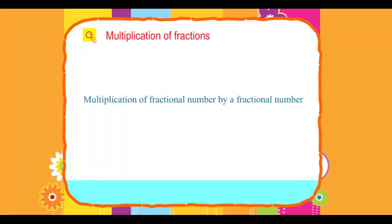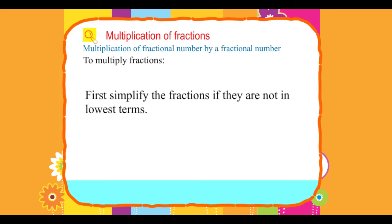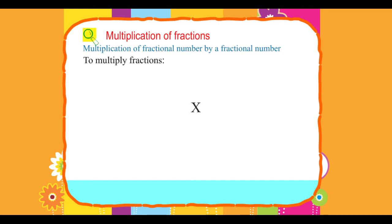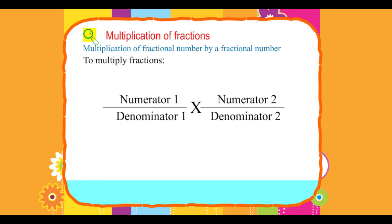Multiplication of a fractional number by a fractional number. To multiply fractions, first simplify the fractions if they are not in lowest terms. Then multiply the numerators of the fractions to get a new numerator, and multiply the denominators of the fractions to get a new denominator.